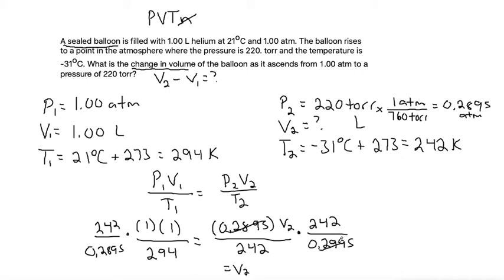So our V2, these will all cancel out, leaving just V2 on the right. 242 times 1 is just 242, divide by the 0.2895 and also divide by the 294 since they're both on the bottom. That gives us that our V2 is 2.843 liters.